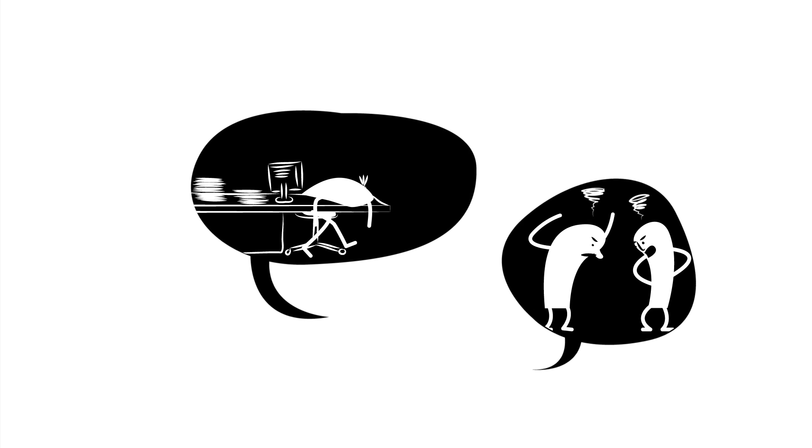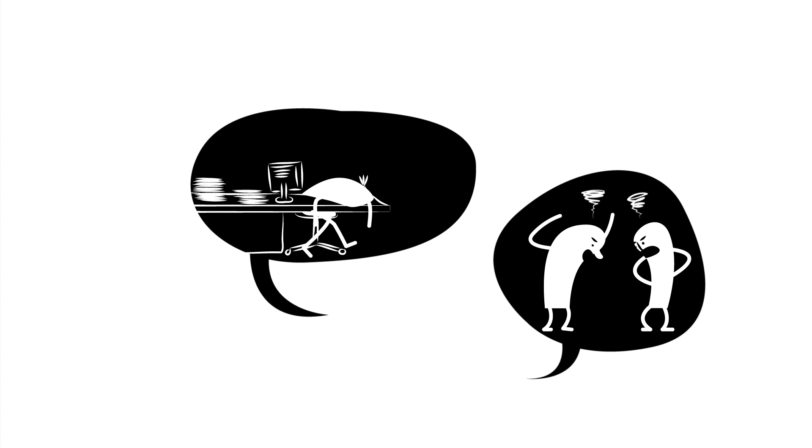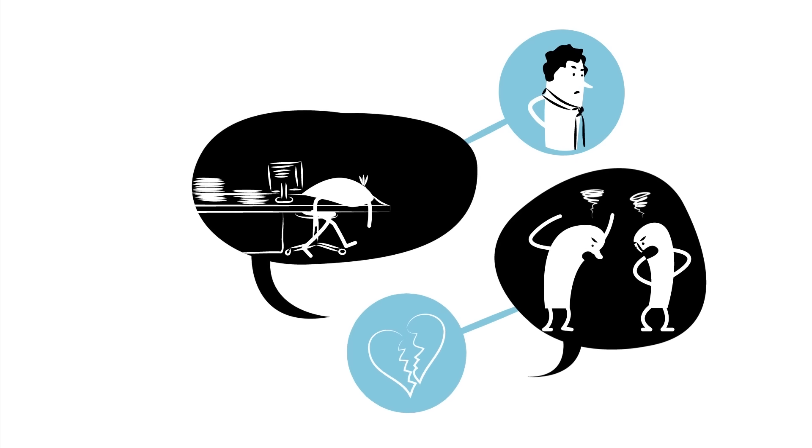They take things we say like, I'm fed up with my job or my partner and I having a lot of rows, and they help us to focus in on what it really is about the job we don't like or what the rows are really about.